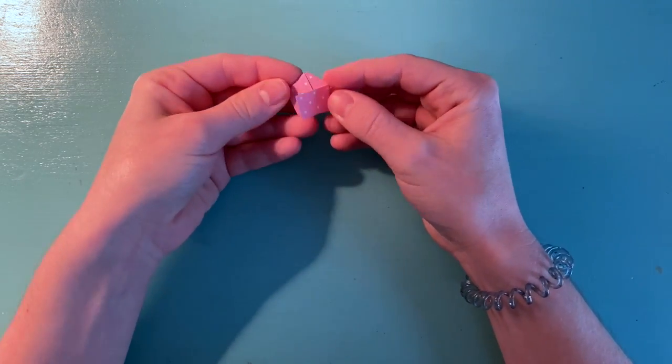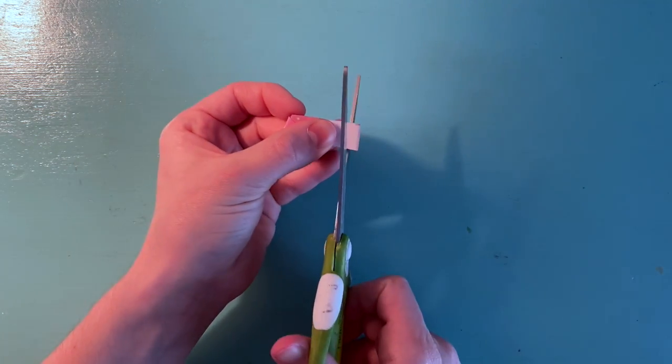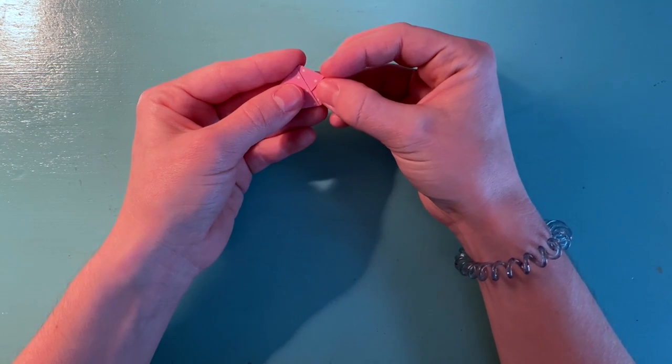Alright, once you're at the end, you're going to have a little tail. If the tail's a little too long, again, you can take scissors and snip it a little bit. Then you'll tuck that tail in.